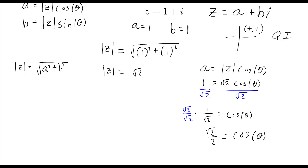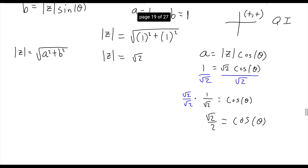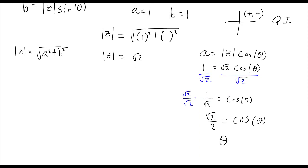So now, again, we said we're restricting ourselves to quadrant 1. So if we need cosine to be the square root of 2 over 2 in quadrant 1, then theta has to be pi over 4. So there we go.